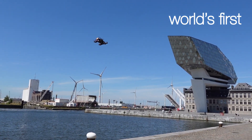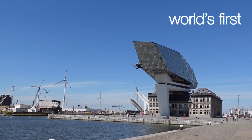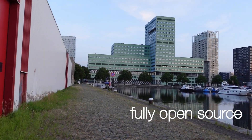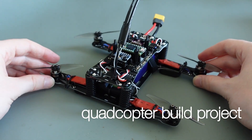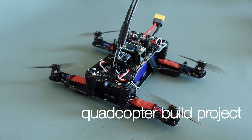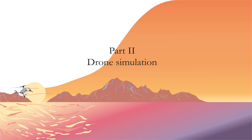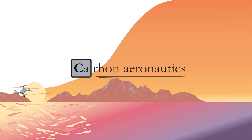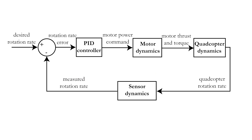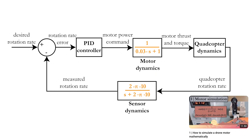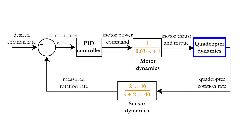Welcome to the second video series on this channel where we focus on the mathematical concepts behind quadcopter drone control. Today, we will have a look at how you can mathematically simulate the quadcopter dynamics. In the previous video, we learned how to simulate the gyroscope and motors mathematically. The dynamics of the quadcopter itself can be simulated by considering the different movements separately.